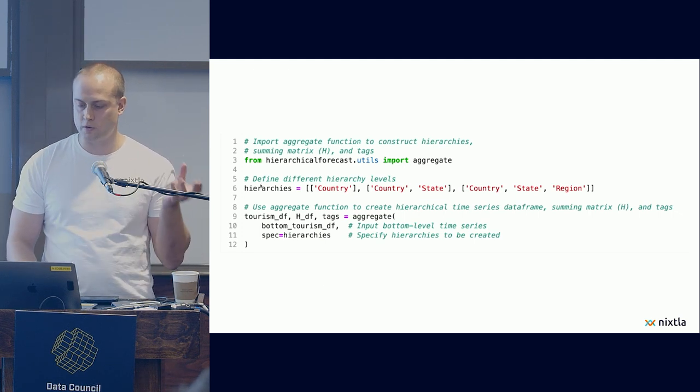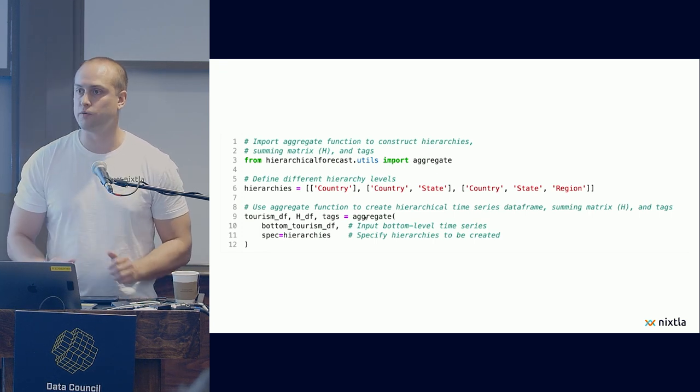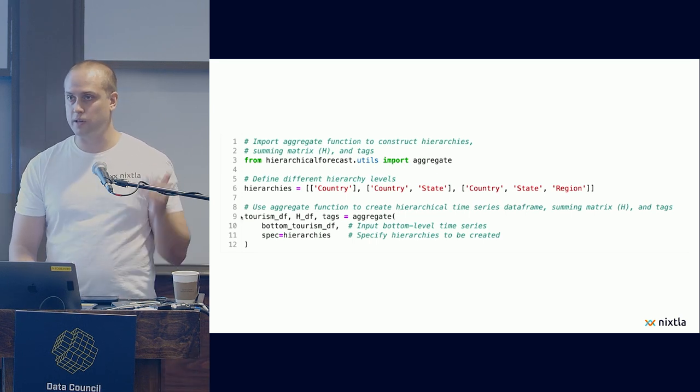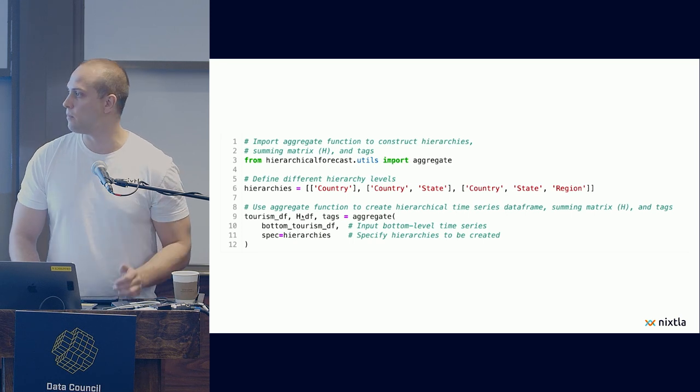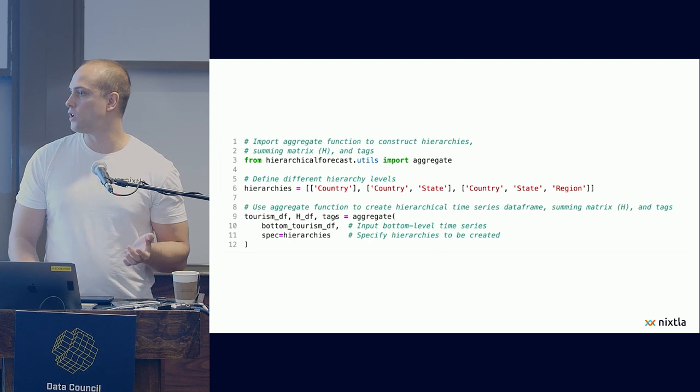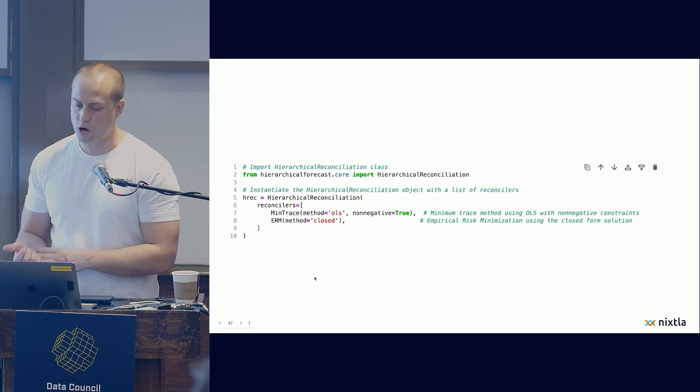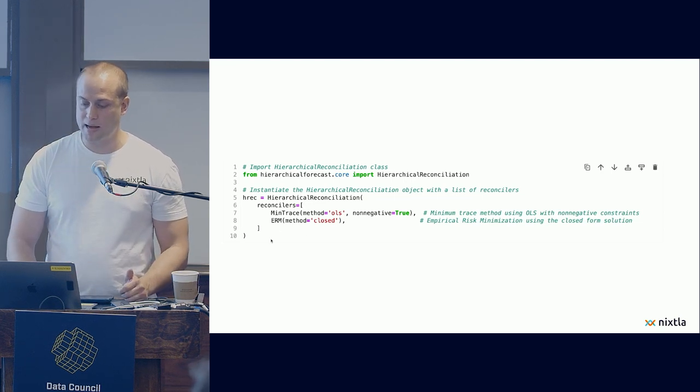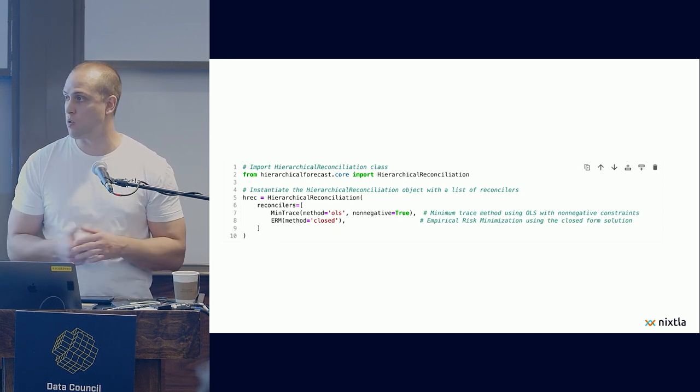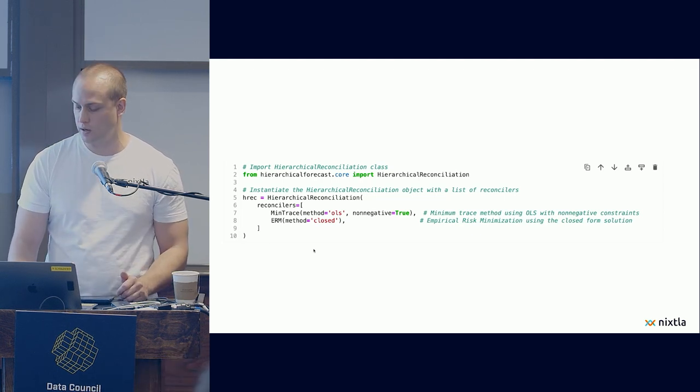We define the hierarchies, we set country, country-state, country-state-region, then we generate with the aggregate function the three values that are important for us, the hierarchical data frame, the important summing matrix H that I introduced at the beginning, and some tags. We're going to use this in the next step, and here in the next step we instantiate the hierarchical reconciliation object by simply passing the list of reconcilers that you want or that we would like to use. So we can use as many as we want. Obviously, there are available in the library, but it's really easy to specify the ones that we would like to test.